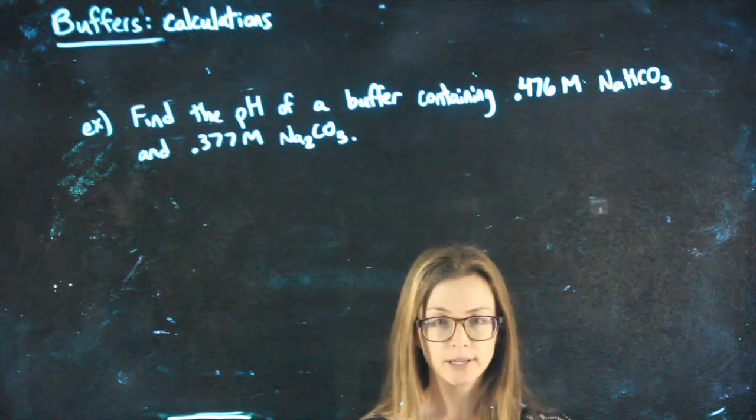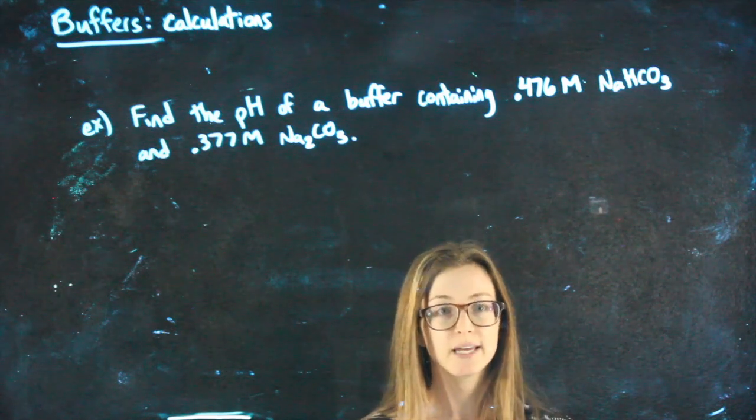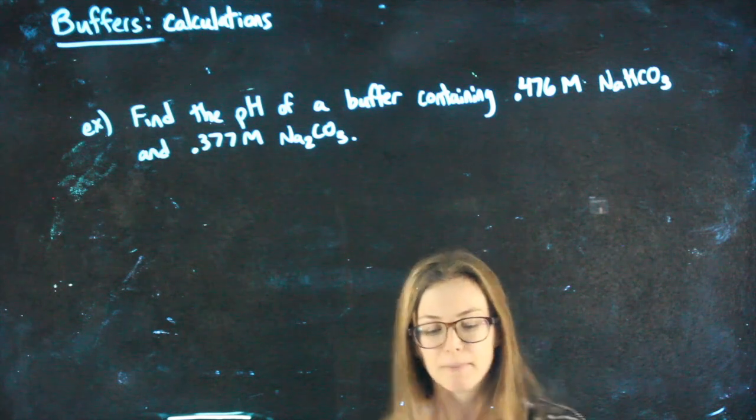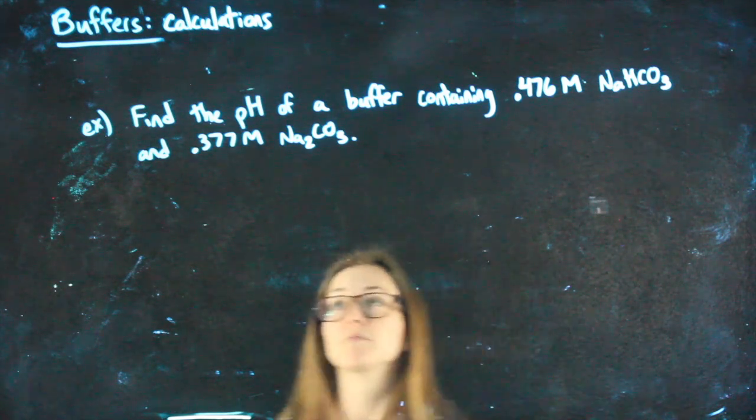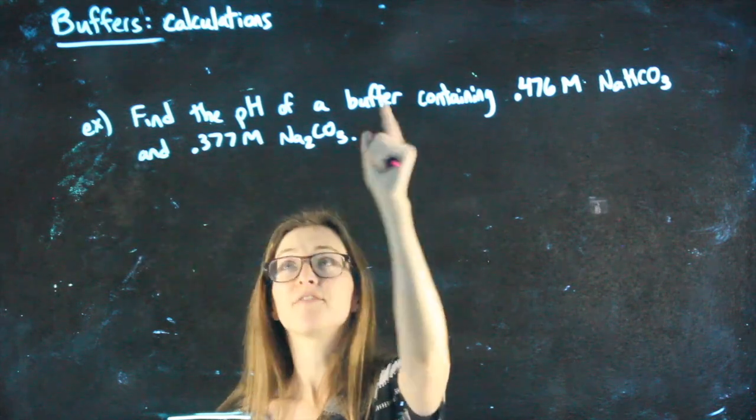When we go to do calculations with buffers, we're going to do it in two steps. That might make it sound simpler than it is, but I really don't think they're that bad. An example problem: find the pH of a buffer.